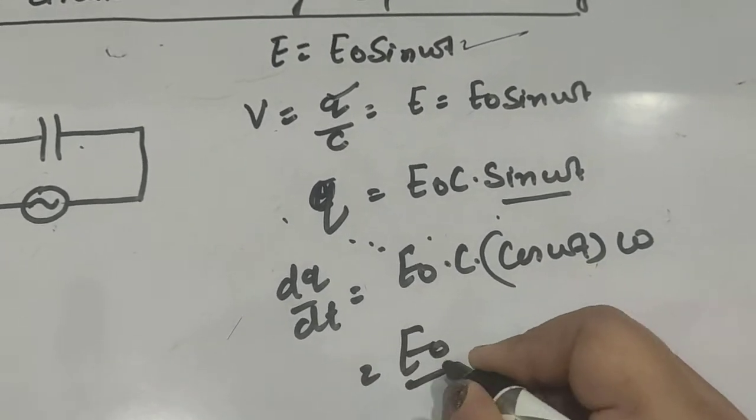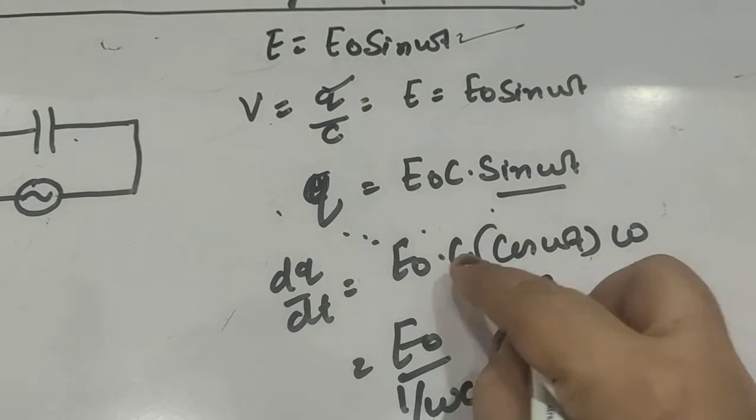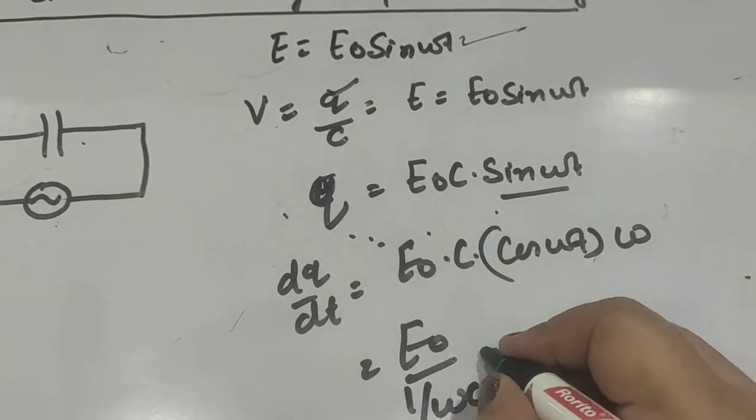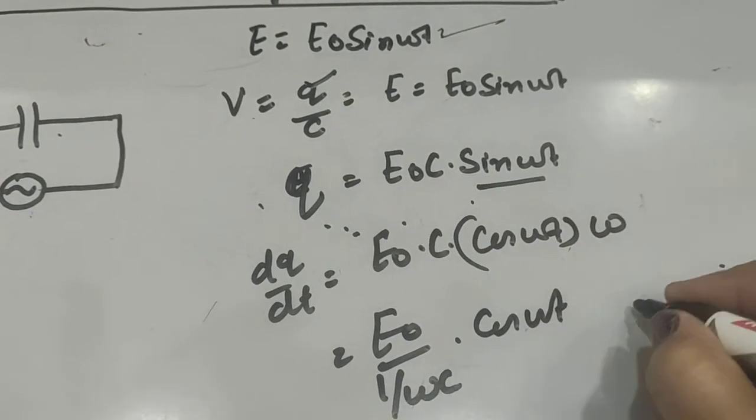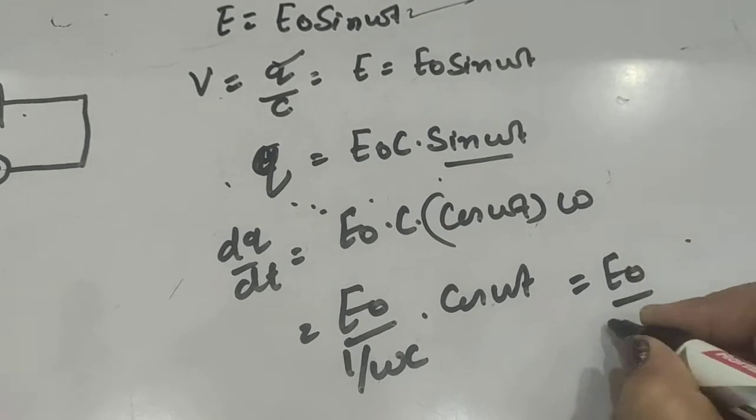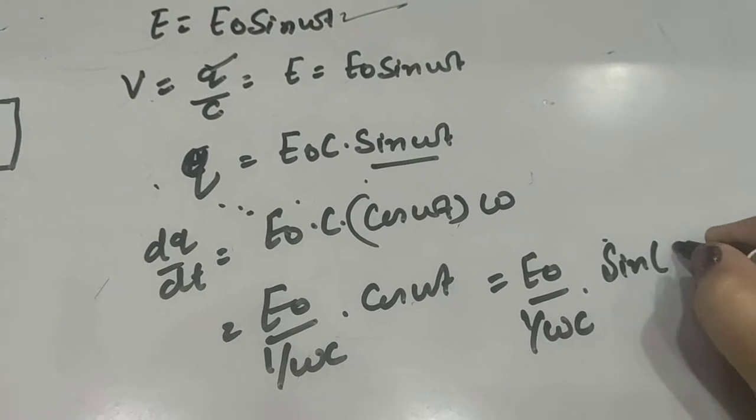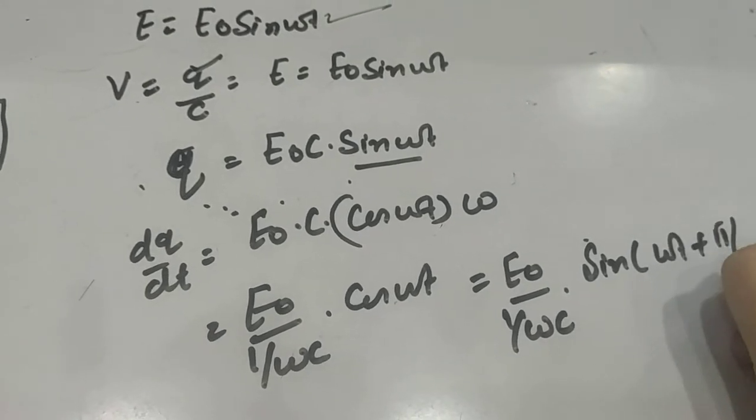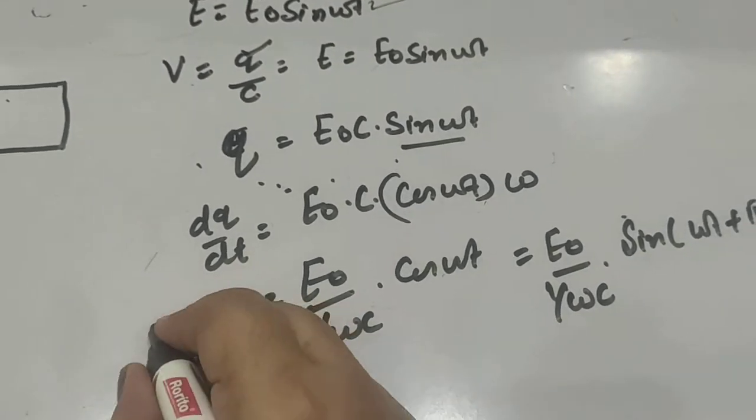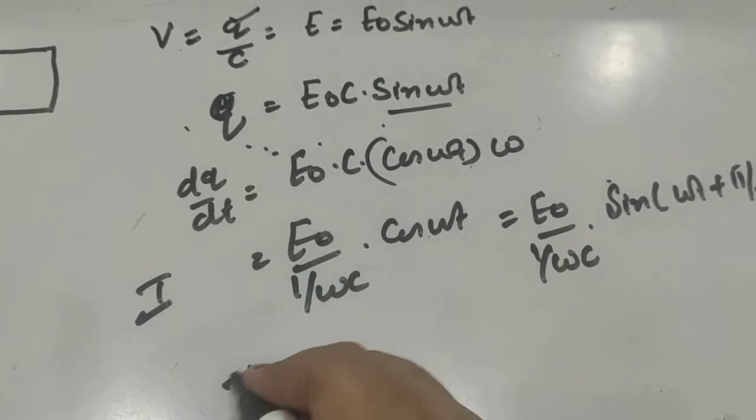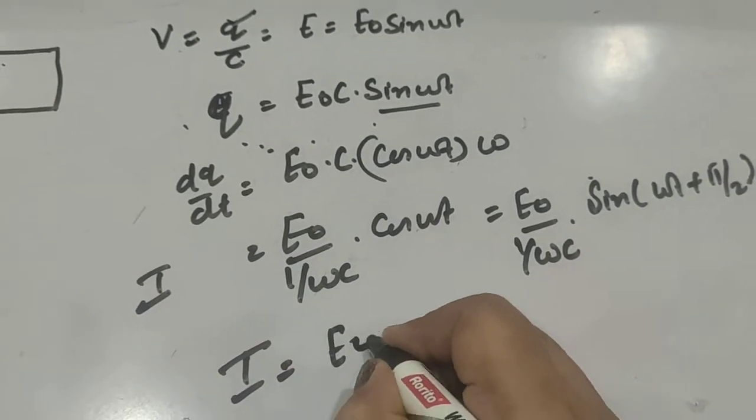So we can write it as E₀/(1/ωC), this C and ω goes down, cos(ωt). Or that is equal to E₀/(1/ωC) cos(ωt) can be written as sin(ωt + π/2). So this is the current.